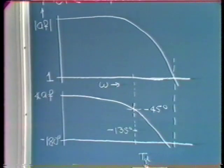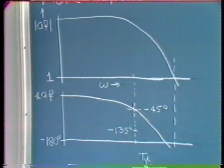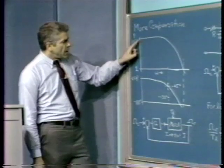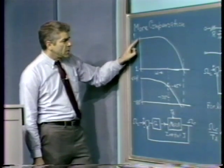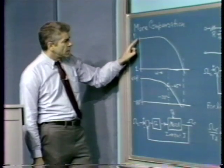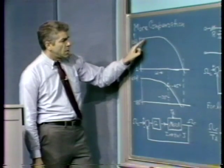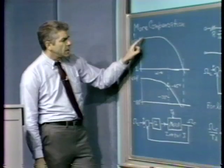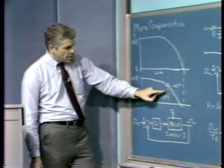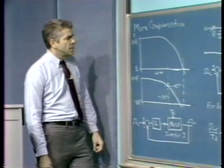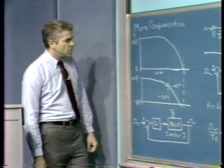Now, suppose I'd like to modify that system and try to increase its phase margin, possibly to 45 degrees. If I added one more pole to the system at a sufficiently low frequency, I could get the magnitude to roll off and get down to unity before acquiring enough phase shift to cause instability.